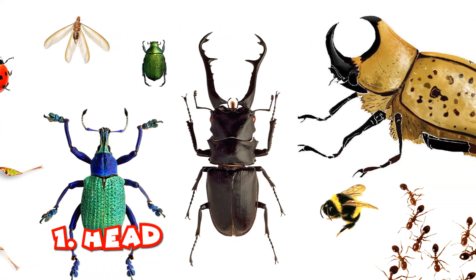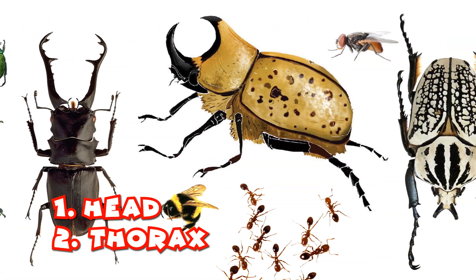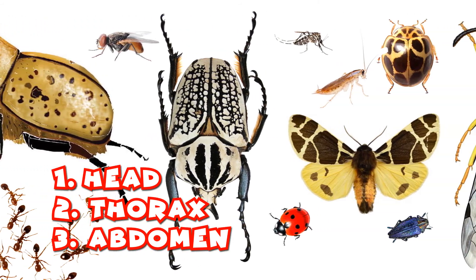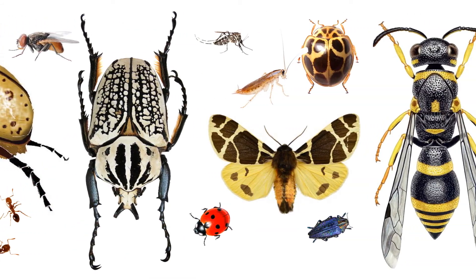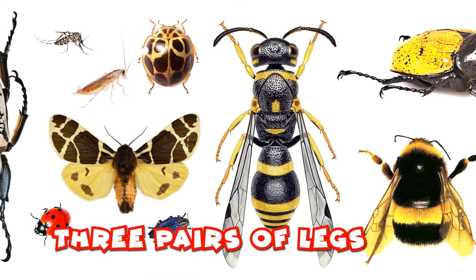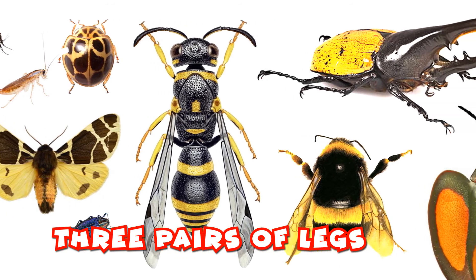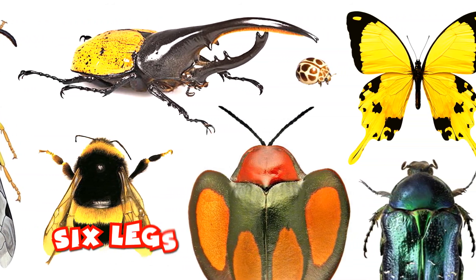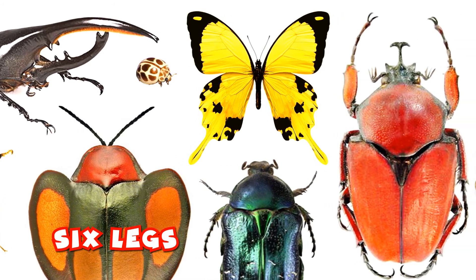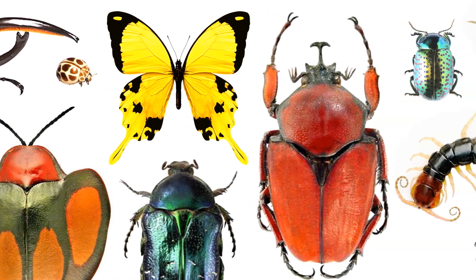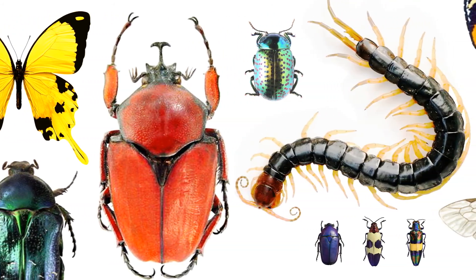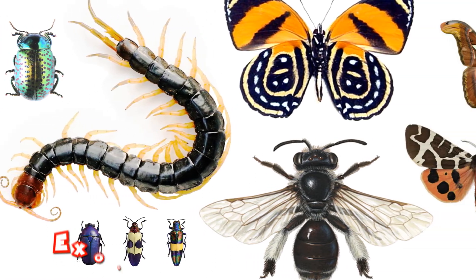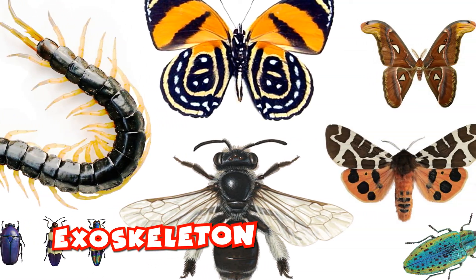The head, the thorax, and the abdomen. The second feature is that they have three pairs of legs. Three pairs equals six legs. And they have a skeleton on the outside of their body, which is called an exoskeleton.